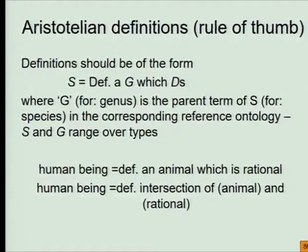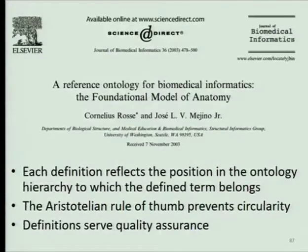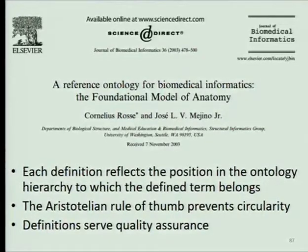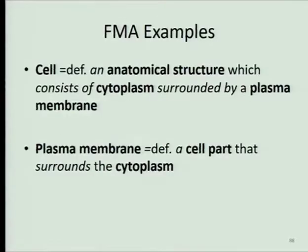The form of a definition is: an instance of the species is an instance of the genus which has this particular differentiating condition. This idea was put forward in what is still a classic of biomedical informatics, which sets forth the principles underlying the foundational model of anatomy — and I recommend you read this piece, it truly is a wonderful piece. If you have a definition following that rule, you already know what the parent term should be in the ontology and vice versa. This rule also does a lot to prevent circularity because it forces you to think at a higher level rather than just thinking about the term you started with, which tends to lead in the direction of circularity.